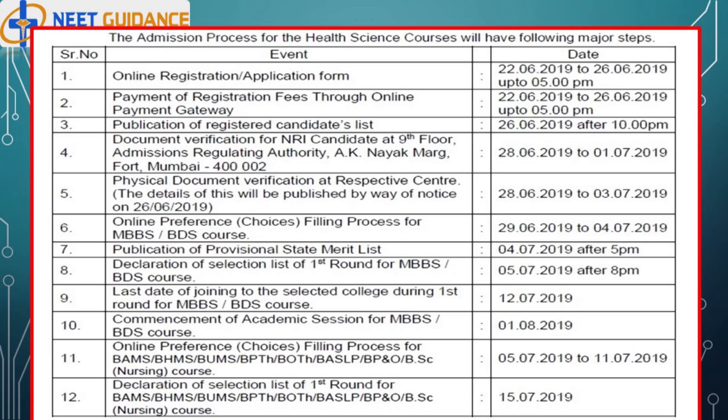The admission process for health science courses will have the following major dates. Maharashtra online registration starting date is 22nd June 2019 to 26th June 2019 up to 5 PM. Payment of registration fees through online payment gateway: 22nd June 2019 to 26th June 2019 up to 5 PM. Publication of registered candidates list: 26th June 2019 after 10 PM.